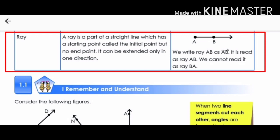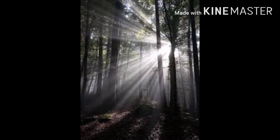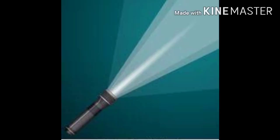The last concept of today's session is ray. A ray is a part of a straight line which has a starting point called the initial point but no end point. It can be extended only in one direction. We write a ray AB as AB with the arrow mark at the top. It is read as ray AB. We cannot read it as ray BA. For example, have you noticed the rays of the sun? They start from a light source, that is the sun, and go on endlessly in one direction. Rays from a torch are also an example of the same.